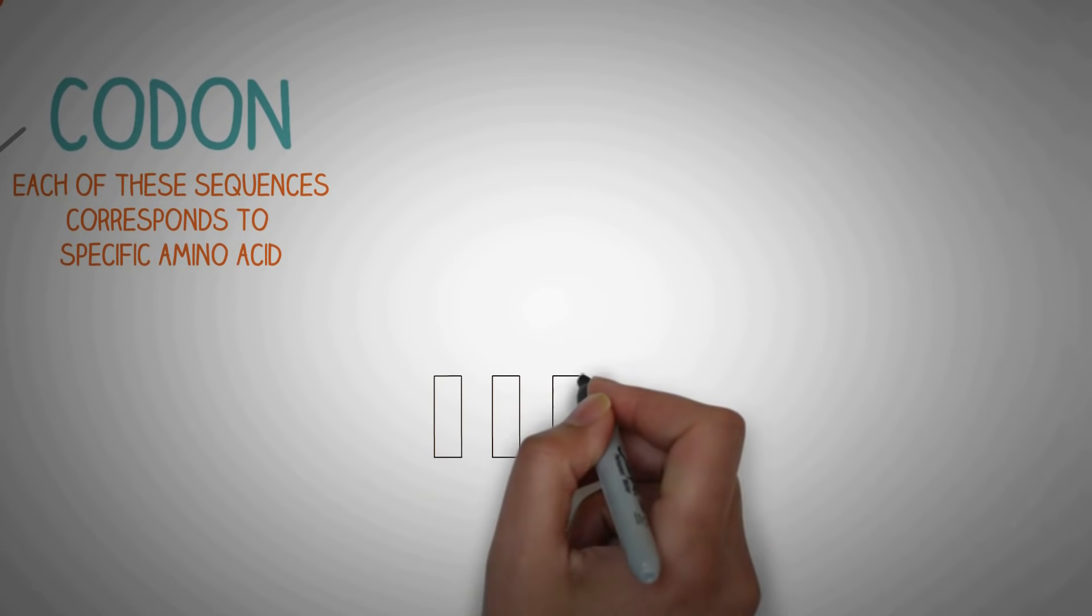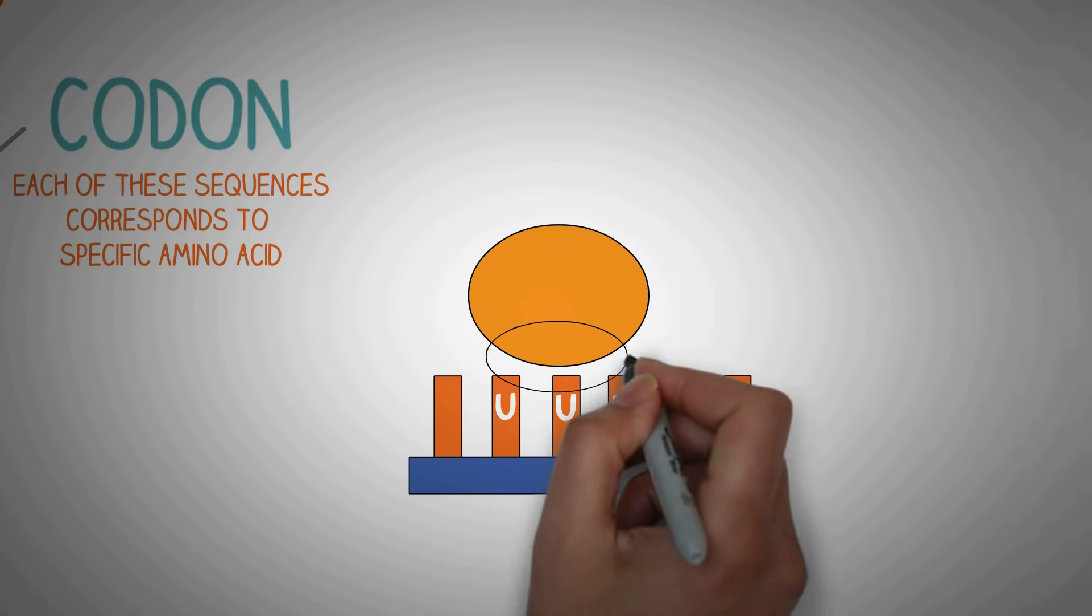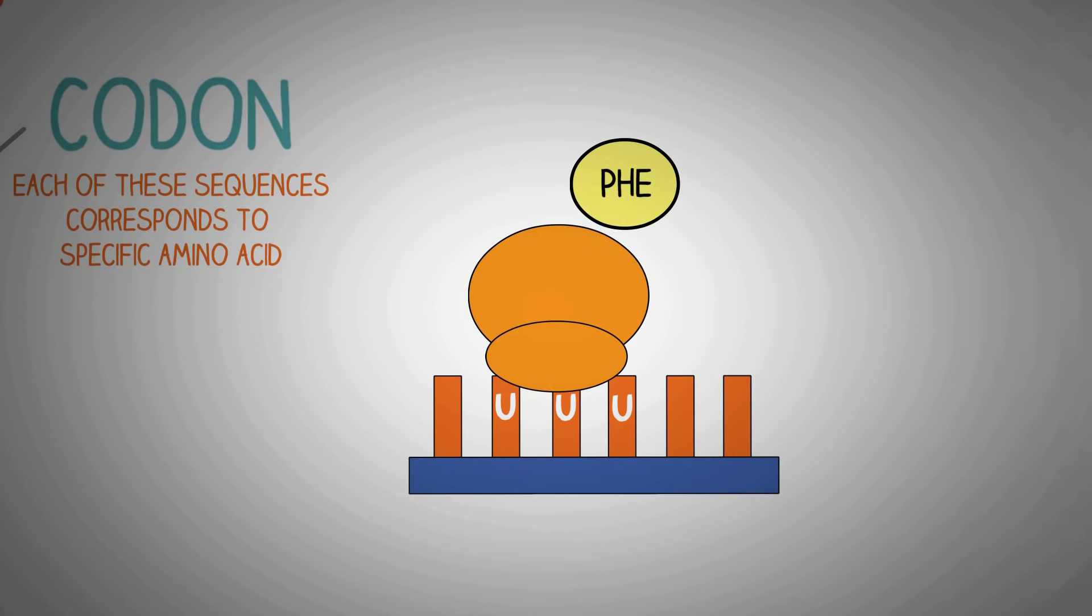For example, if three uracil bases are in sequence, which means the code will be UUU, the ribosome will read this code and the amino acid that is used will be phenylalanine.